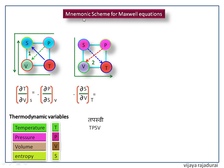Next on the right side, P to V via T. It is downward direction so put a negative sign — partial derivative of P with respect to T at constant V. This is one of the Maxwell equations.